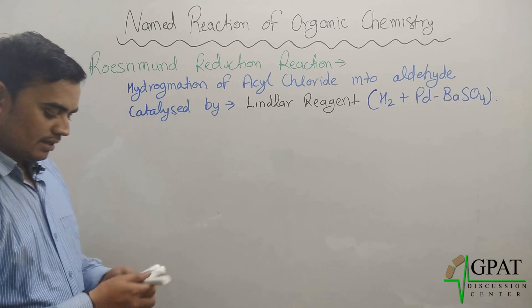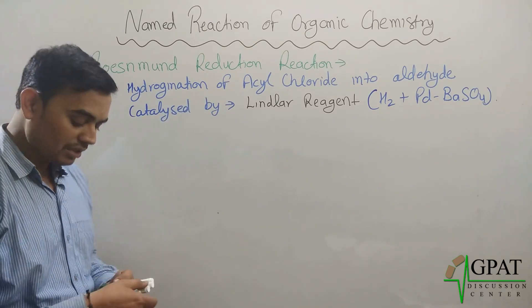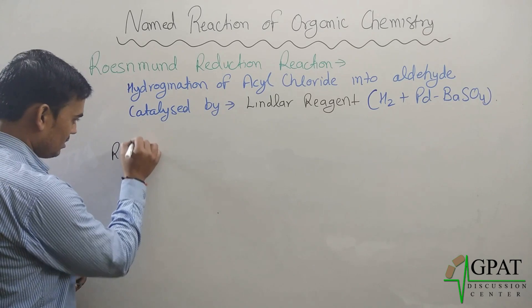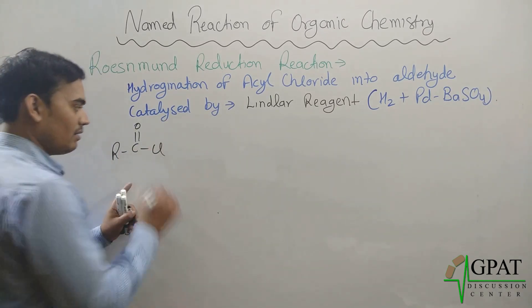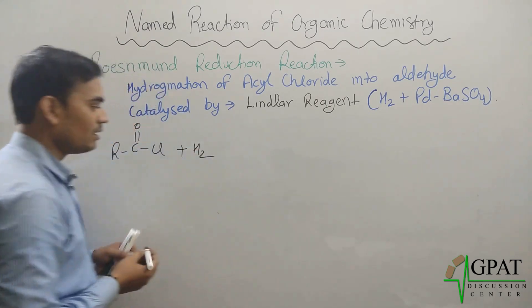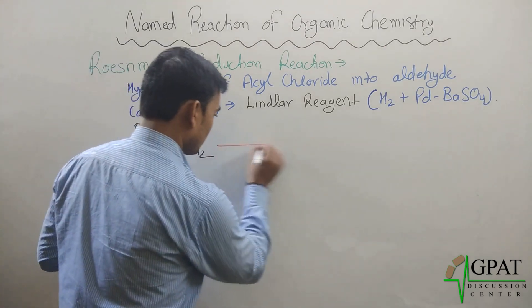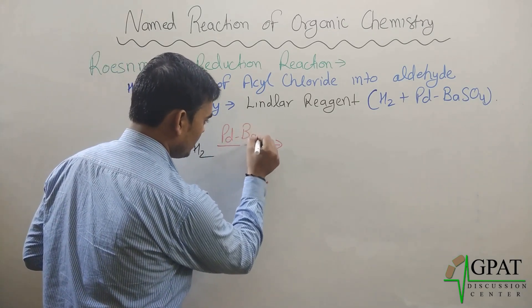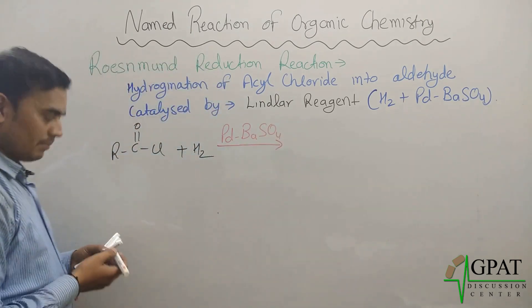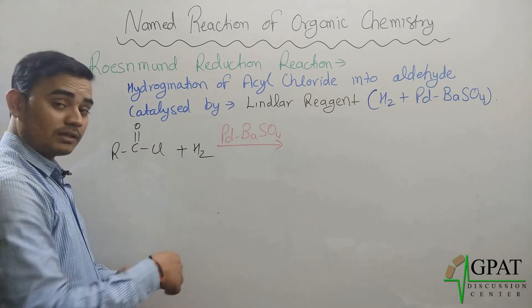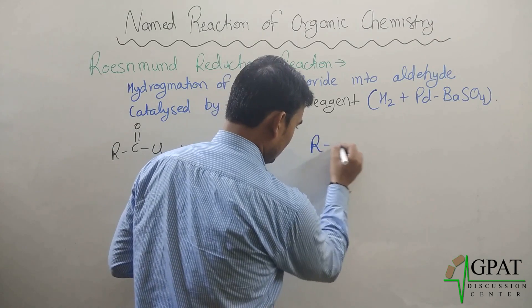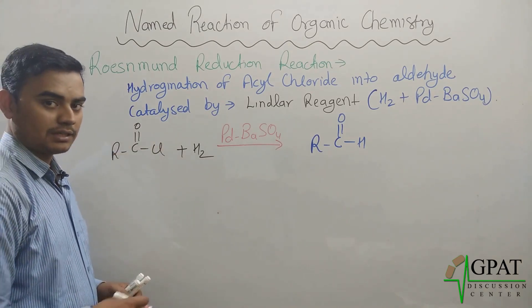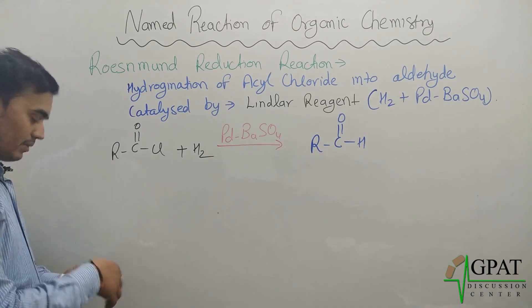This is the main theme about the Rosenmund reduction reaction. What will happen in this reaction? Any acyl chloride, when it reacts with hydrogen gas under the catalysis of palladium barium sulfate, the product will be an aldehyde, that means R-CHO. This is the Rosenmund reduction reaction.